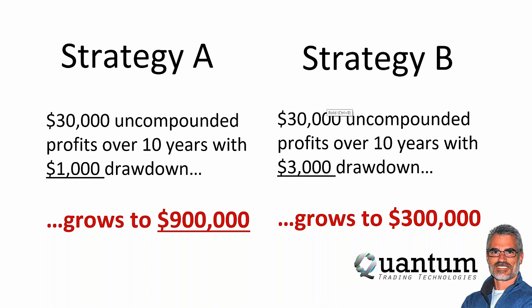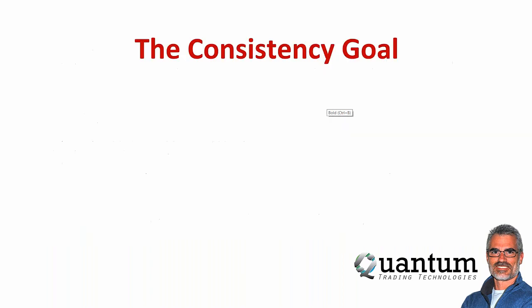Here's an example — strategy A versus strategy B. If over 10 years you make $30,000 non-compounded (just $3,000 a year) but your drawdown is only $1,000, you can grow that into $900,000 compounded. But if you have an average drawdown of about $3,000, that same $30,000 only grows to about $300,000 — because you have to be slower with how you geometrically grow your account.